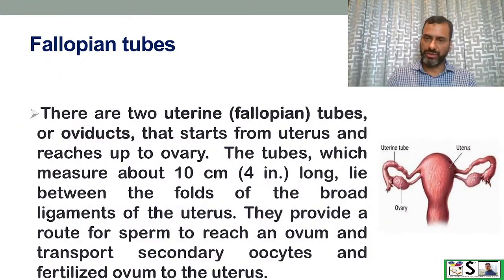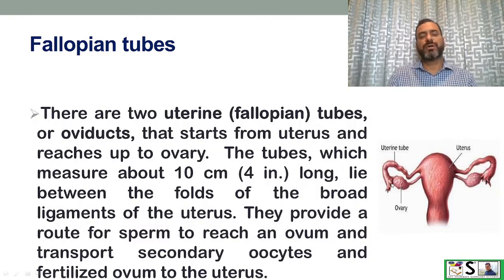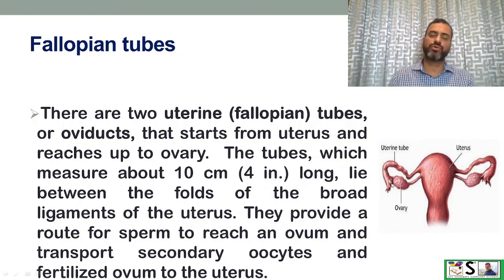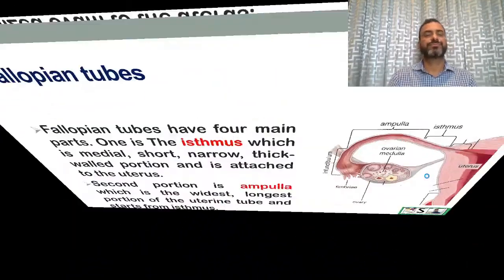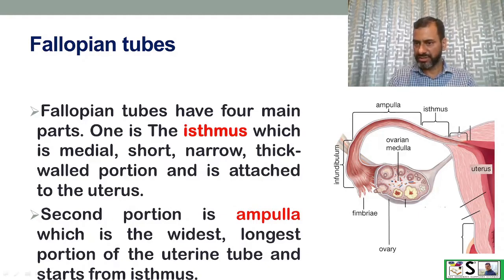There are two fallopian tubes, one on each side of the uterus. They start from the uterus and reach up to the ovary, measuring about 10 cm in length. They lie between the folds of the broad ligament. The fallopian tubes provide a route for sperm to reach the ovum and transport the secondary oocyte and fertilized ovum toward the uterus. The tubes have four parts: the isthmus, which is the medial thick-walled portion attached to the uterus; and the ampulla.